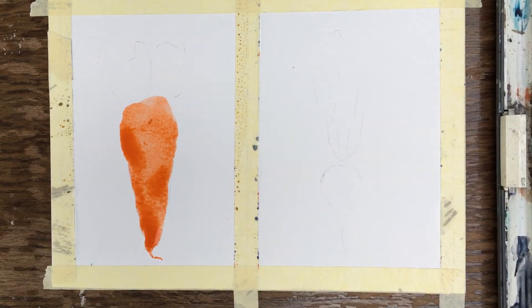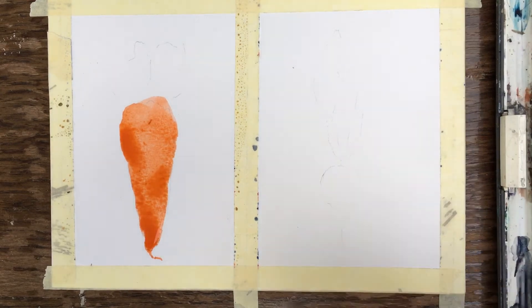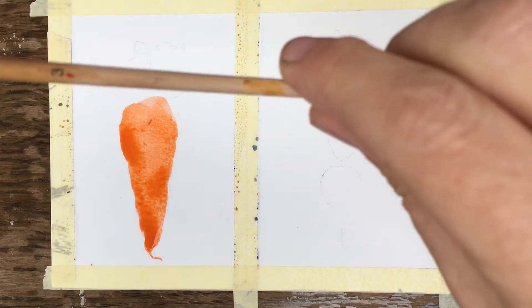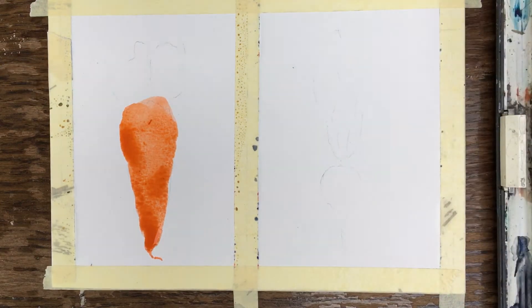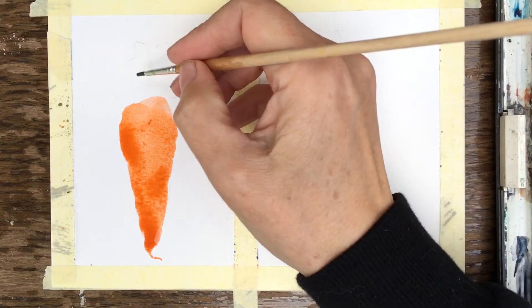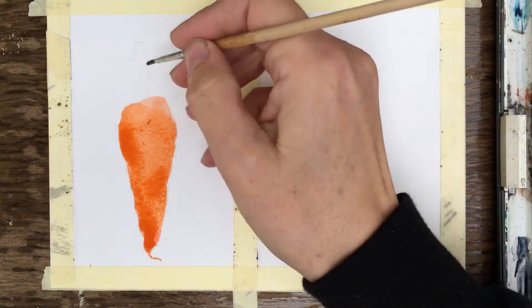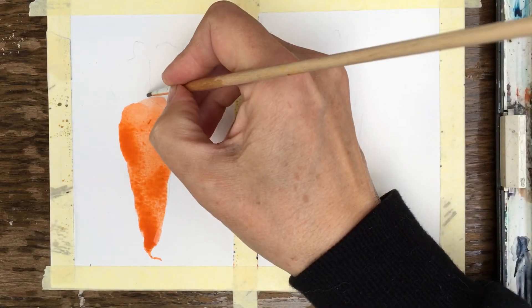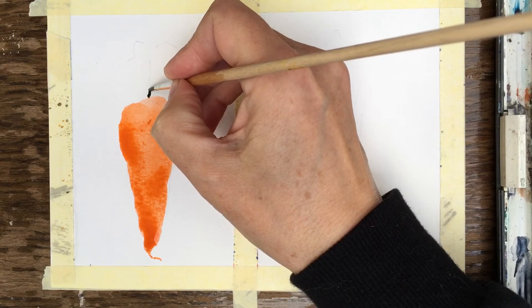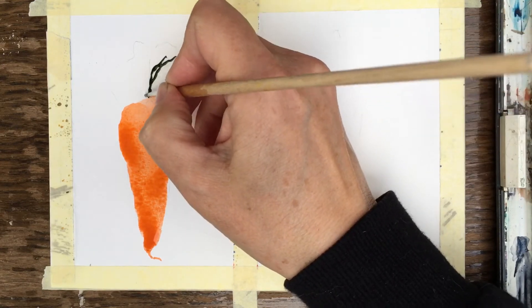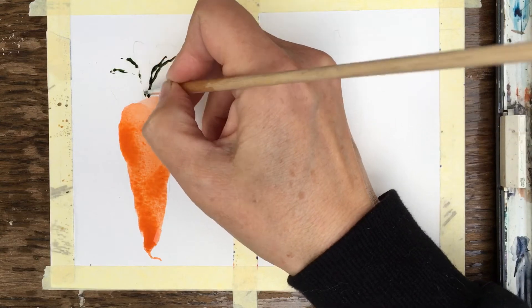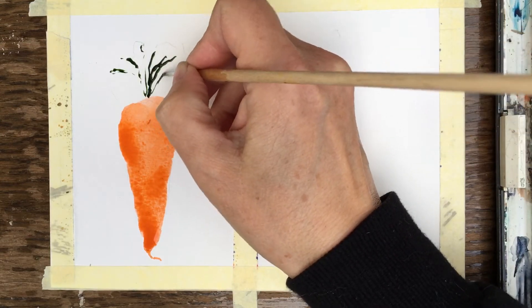We'll put our Chinese brush down. You can leave the orange on it if you want to for the moment. And I'm going to pick up my detail brush, which I used in the previous tutorial, which is a number three. And I'm going to pick up some sap green. And I'm just going to go very carefully into the top of the carrot here. And I'm just going to put in some lines. Very loose lines like this.